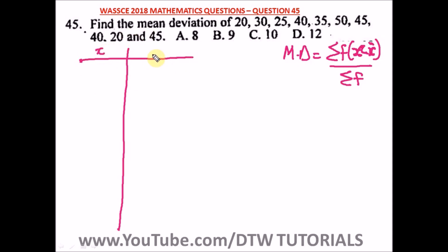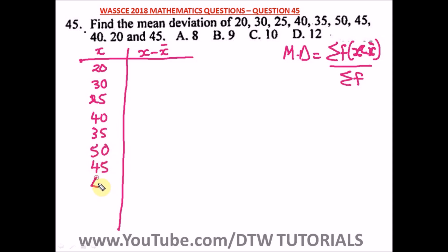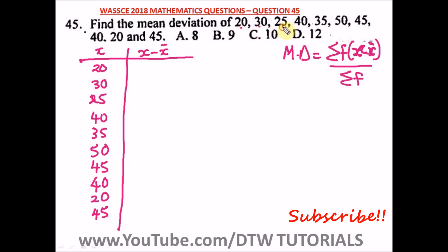Our table has columns for the values x and for x minus the mean. The values are: 20, 30, 25, 40, 35, 50, 45, 40, 20, and 45. The number of values n equals 10.